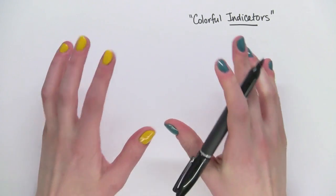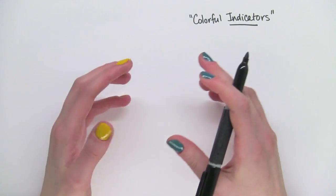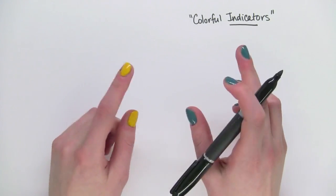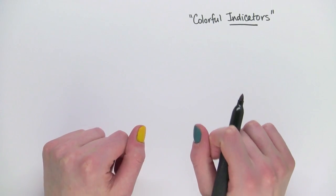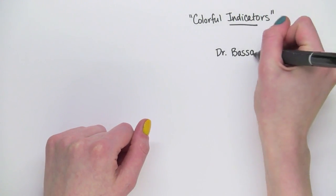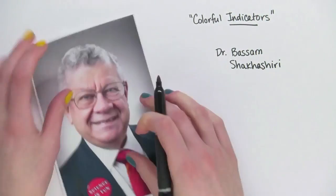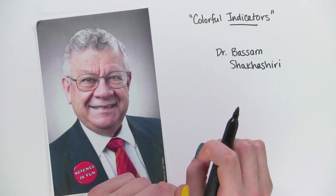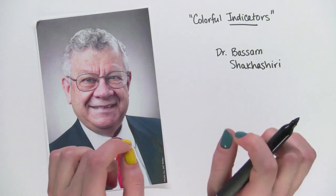Indicators show us what we normally wouldn't be able to see, from the canary in the coal mine to paint that changes color with temperature to the acid-base indicators we'll be seeing today. Chemist Dr. Bassam Shakashiri is going to be showing us the demo. He's the president of the American Chemical Society and performing this demo right here at MIT.